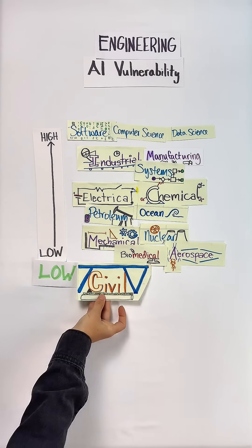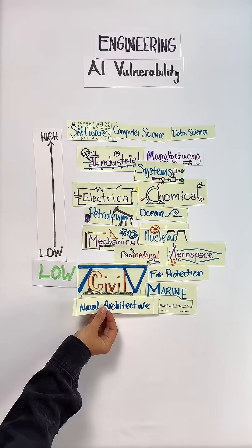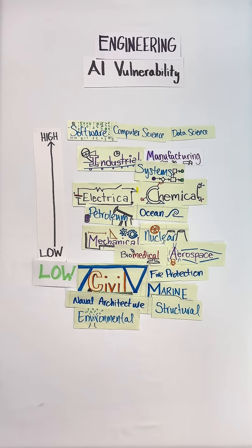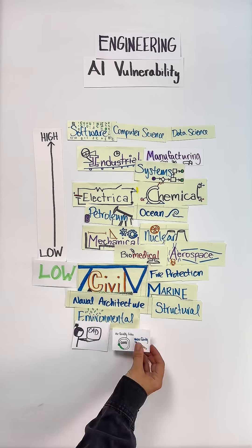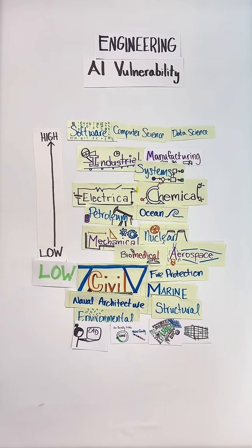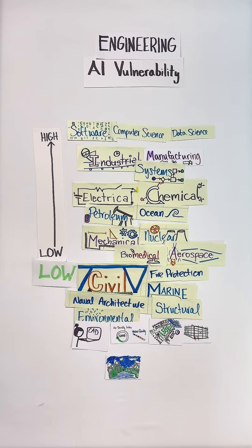The lowest risk fields are civil, fire protection, marine and naval architecture, structural, and environmental engineering, all of which lean the heaviest on site-specific knowledge and regulatory compliance. AI cannot touch the unpredictable, highly dynamic real world yet. So you can AI-proof your career with all of the above and by excelling at field work.